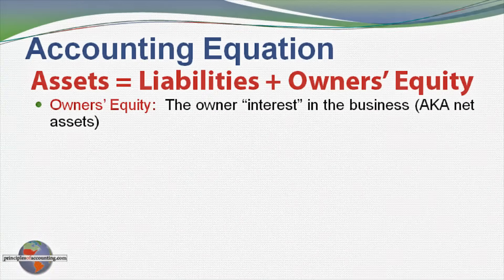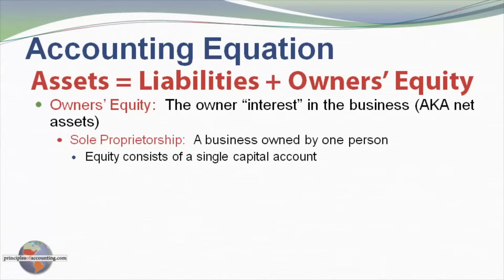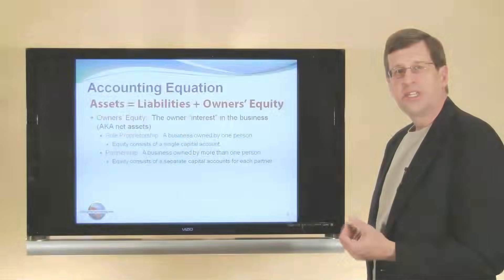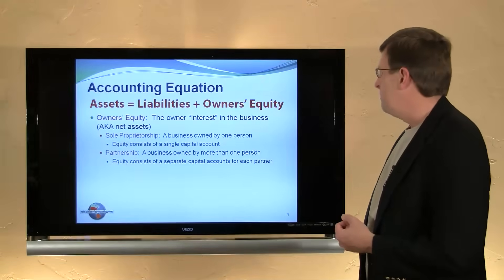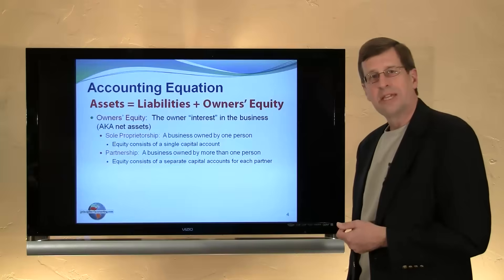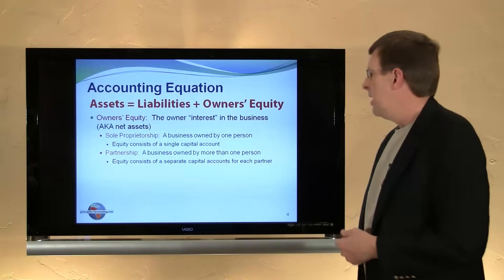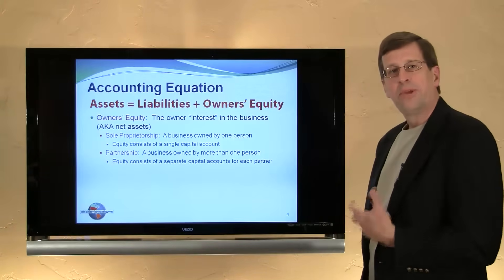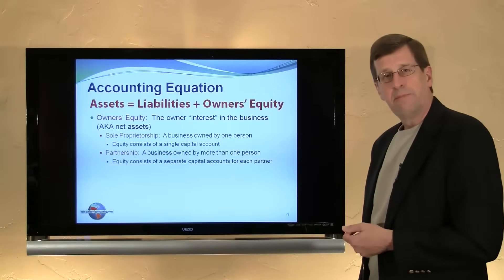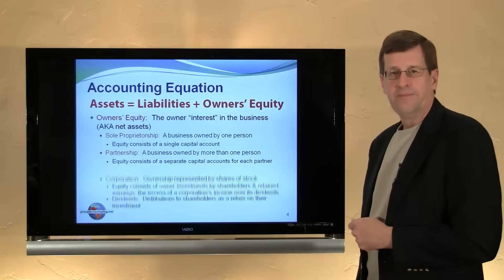The character of the equity is somewhat dependent upon the type of entity. A sole proprietorship is a business owned by one person, and the owner's equity will typically consist of one owner's capital account. An extension of that form of business would be a partnership, which is a business owned by more than one person, and the equity would consist of multiple capital accounts, typically one for each partner.